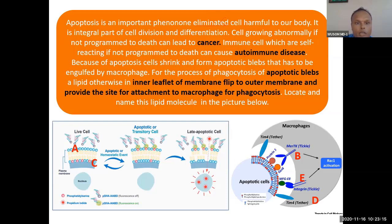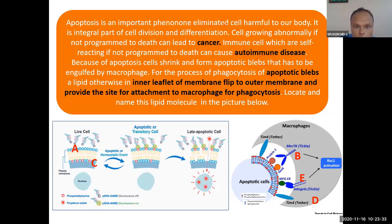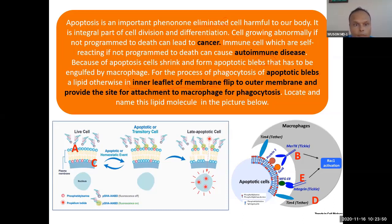Because of apoptosis, the cell shrinks and forms apoptotic blebs, which have to be engulfed by macrophages. For this phagocytosis to occur, a lipid that is otherwise present on the inner leaflet of the membrane flips to the outer membrane and provides the site for attachment to macrophages.